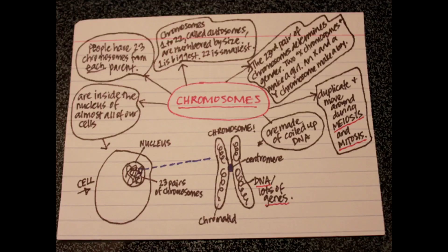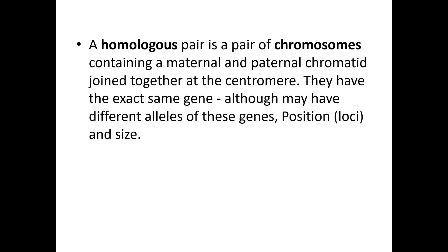Chromosomes are thread-like structures of DNA carrying genetic information in the form of genes. You can see the structure of the chromosomes: the centre is the centromere, and the arms of the chromosome are called chromatids.